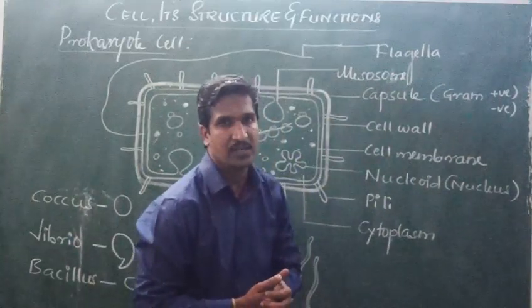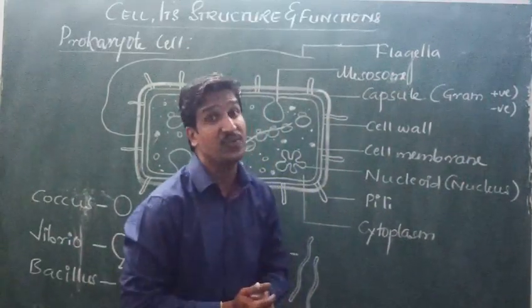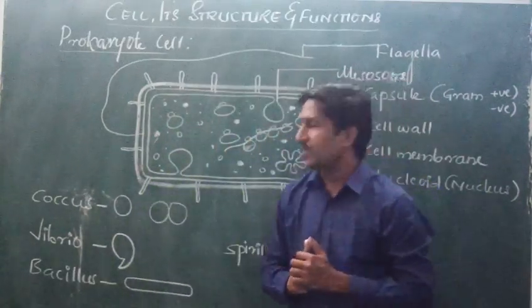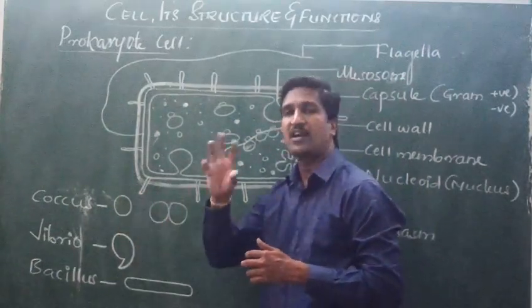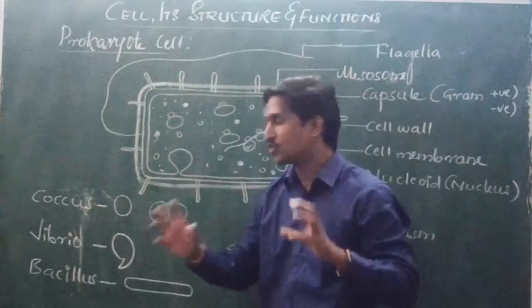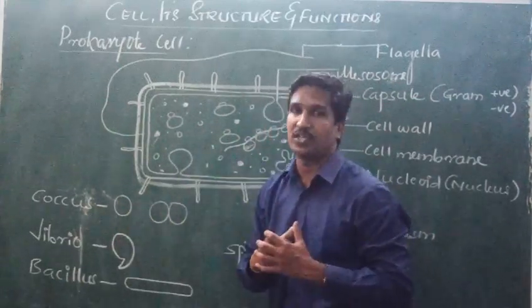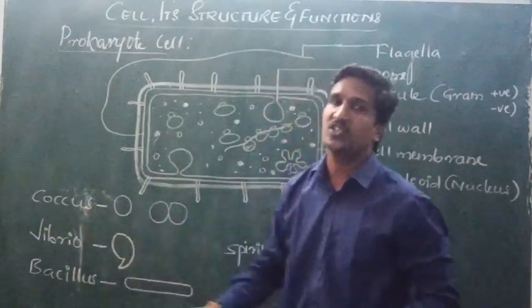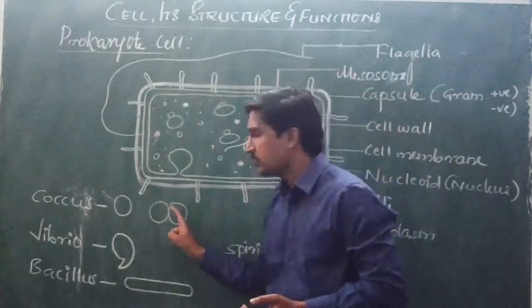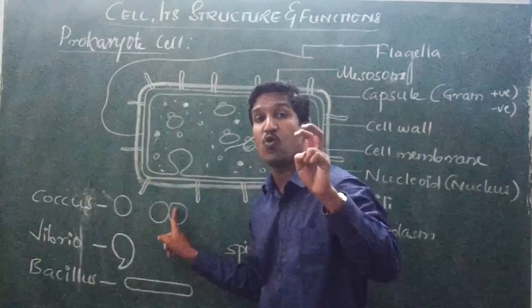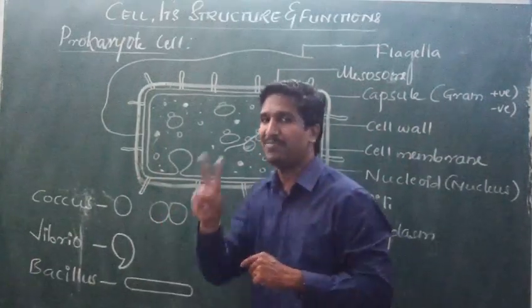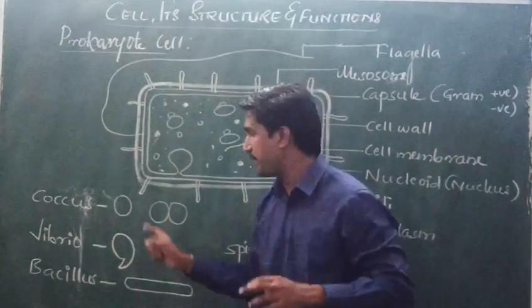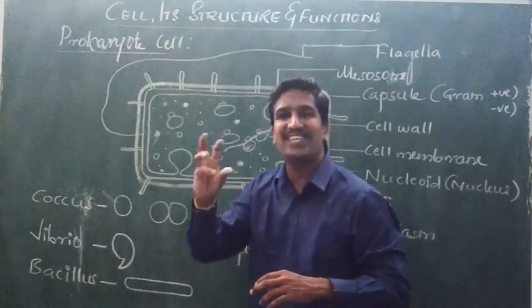Bacteria are classified into four different types on the basis of their shape. If the shape of the bacteria is circular, round, ball-like structure, we consider that bacteria as coccus type. Diplococcus means two bacteria combined together. The shape of these bacteria is round or circular.